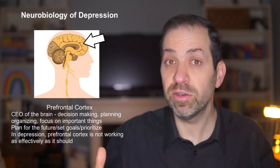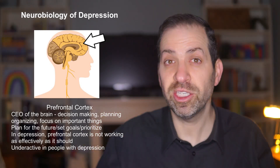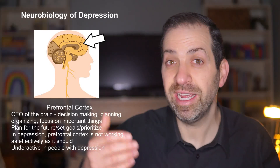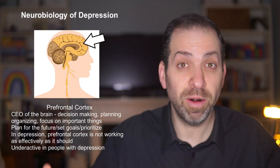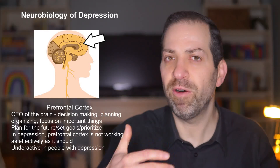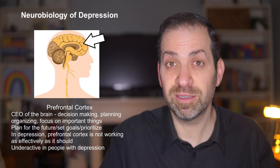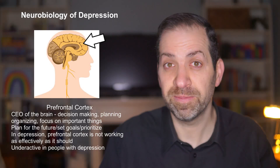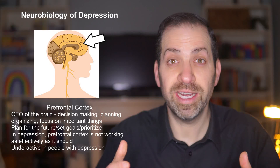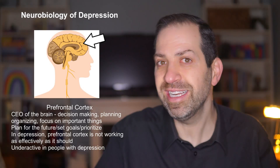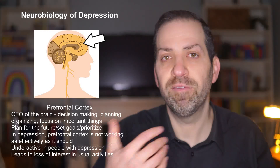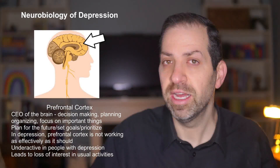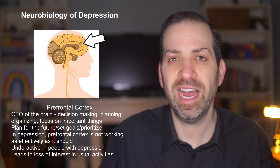Studies have shown that the prefrontal cortex is often underactive in people with depression, meaning it's not working as hard as it should be, which can result in difficulties with decision making and planning. When the prefrontal cortex isn't functioning properly, it can be hard to set goals and follow through on them. It can also make it difficult to focus on tasks, which can lead to procrastination and avoidance. Additionally, this underactivity can cause people with depression to lose interest in activities they used to enjoy, resulting in a lack of motivation. For example, someone who used to love hiking may now find it difficult to even get off the couch and go for a walk.